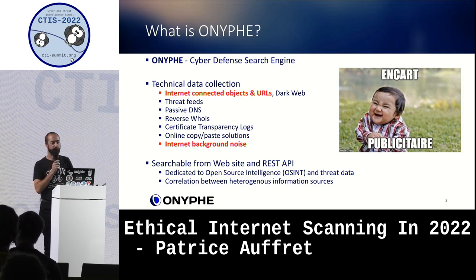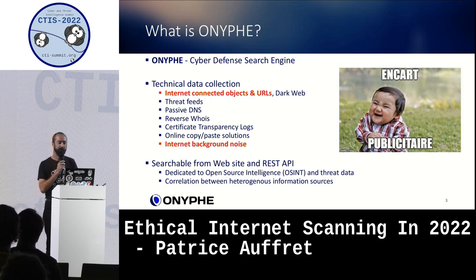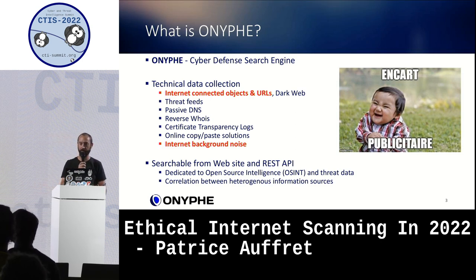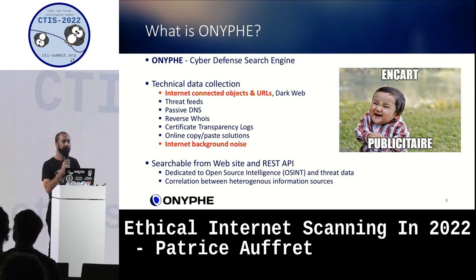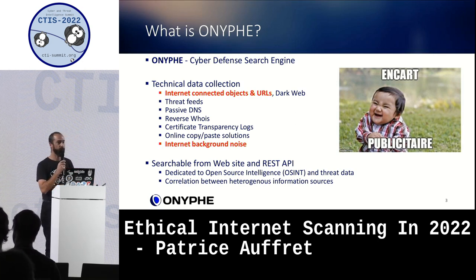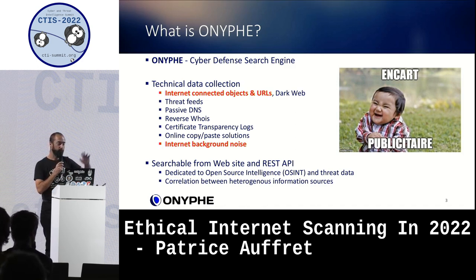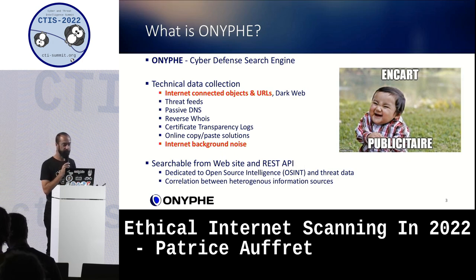Onif is basically a cyber defense search engine. We collect technical data about internet-connected objects and URLs — that's really important because you have to scan URLs too, not just IP addresses, since a static IP can host many websites. We also scan the dark web and collect a lot of information. Another important aspect is listening to internet background noise, which I'll explain why matters.